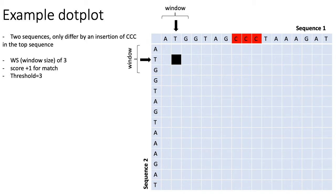When drawing a dot plot, you have to decide three parameters. The first is the window size, which says how big of a window around a given column you want to consider as your local sequence. In this example, we select a window size of three, meaning when looking at the column pointed to by the arrow, the local sequence is that base plus one base to the left and right — so the short sequence ATG from the first three columns, and similarly the first three rows of the second sequence.